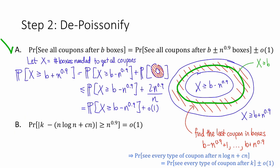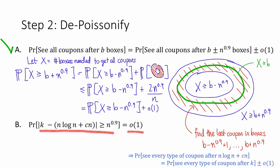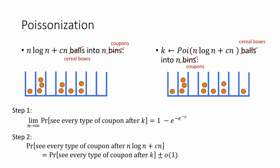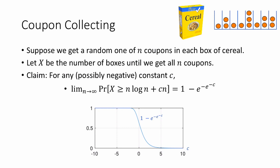For claim b, we want to bound the probability that k deviates from its expectation by more than n to the 0.9. We can apply the tail bound for Poisson random variables that we saw earlier, and this gives us that the probability k deviates by this much is little o of 1. Together, claims a and b imply that the probability of seeing every coupon after n log n plus c n cereal boxes converges to 1 minus e to the minus e to the minus c as n tends to infinity, proving the theorem.